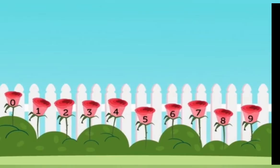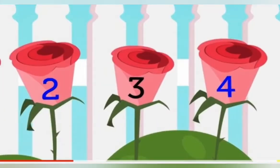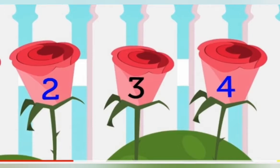Now see here, here are so many roses. On each rose a number is written. Now read these numbers: 2, 3, 4. Now tell me what comes between 2 and 4. Yes, number 3. Number 3 comes between.